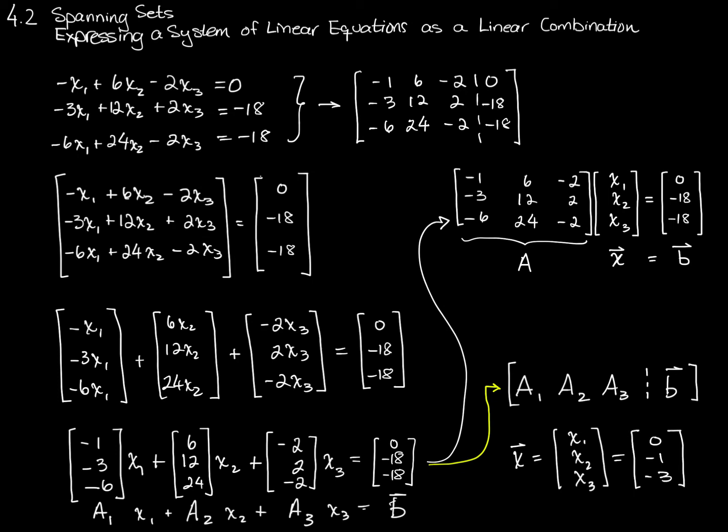And if you replace x1 with 0 at any point in this process, at any stage in the evolution of this system of equations into a matrix, into a matrix equation, or into a matrix, if you replace x1 with 0, x2 with negative 1, and x3 with negative 3, the result will be 0, negative 18, negative 18. So this is just another way to look at systems of equations, rewriting them, writing them in multiple different ways.